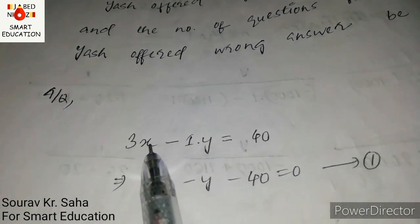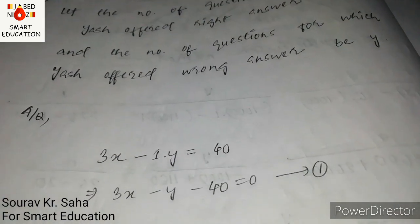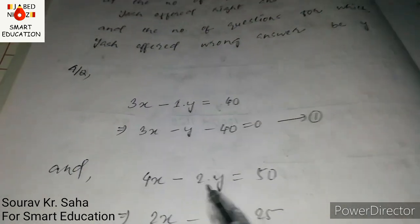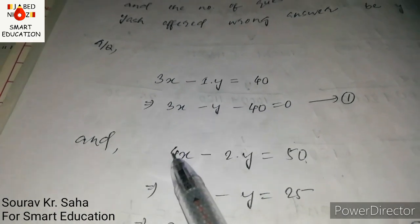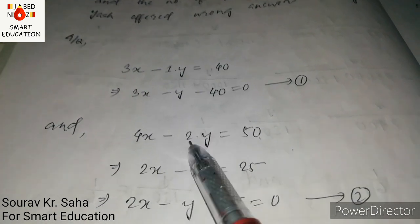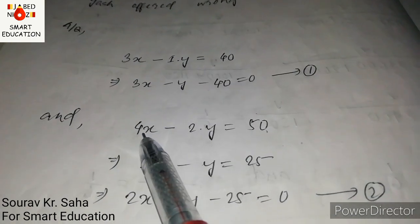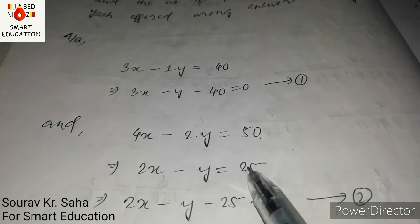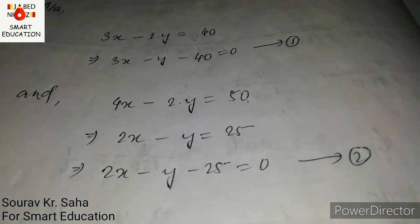For the second case: 4 marks for each correct answer and minus 2 marks for each wrong answer gives 50. So 4x minus 2y equals 50. Dividing by 2: 2x minus y equals 25. Rearranging: 2x minus y minus 25 equal to 0. This is equation two.